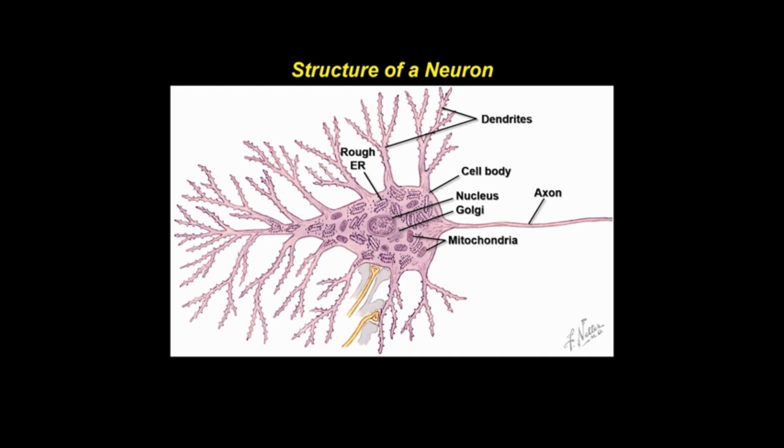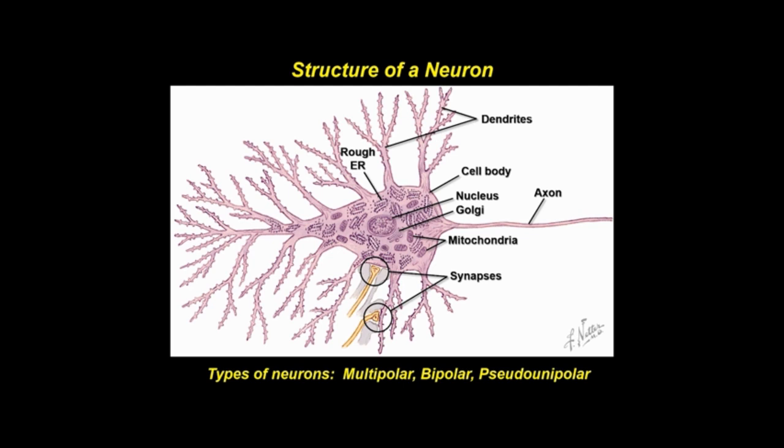Input to neurons occurs at synapses on dendrites or on cell bodies. Types of neurons include multipolar, with one axon and several dendrites; bipolar, with one axon and one dendrite; and pseudounipolar, with one short process that bifurcates into an axon and dendrite.